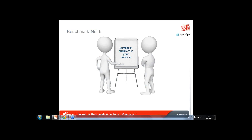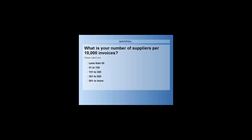Moving to benchmark number six, we will look at the number of suppliers in your universe. Organizations are increasingly doing vendor rationalization — having fewer vendor relationships to maintain — which provides greater buying power and reduces the maintenance work around each vendor from both a payment and purchasing perspective.